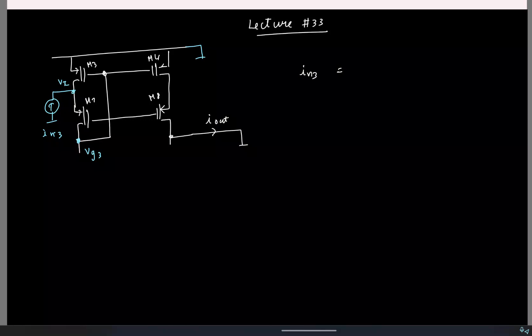So, that is basically gm times Vg3 and we also have the current flowing in M7 and the current flowing from source to drain is minus gm Vgs. So, it is minus gm7 times Vgs7 and what is Vgs7? Remember that this is all bias voltage, this is incrementally ground. So, what is Vgs7 here? Minus Vx.